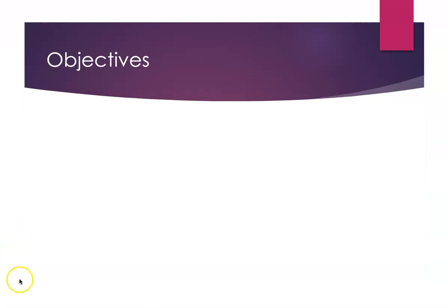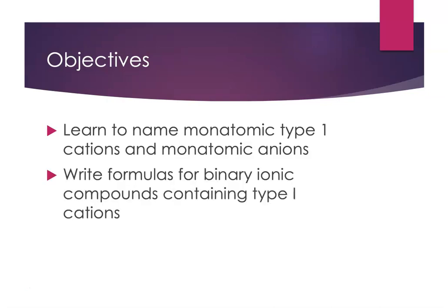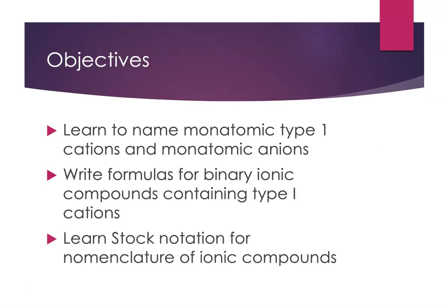So what do we want to accomplish in this webcast? We're going to start by naming monatomic ions — monatomic Type 1 cations and monatomic anions. When I say monatomic, I mean they're ions formed from a single atom that gained or lost a number of electrons. We'll also learn to write formulas for binary ionic compounds that contain Type 1 cations, and then we're going to learn to name them.